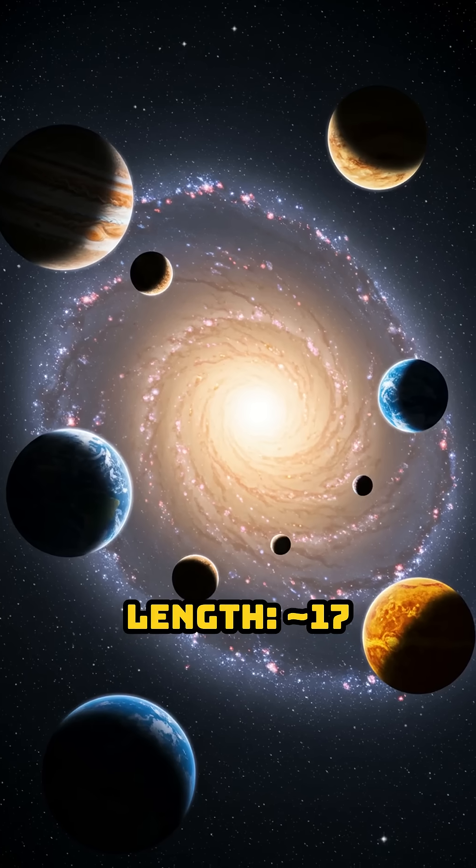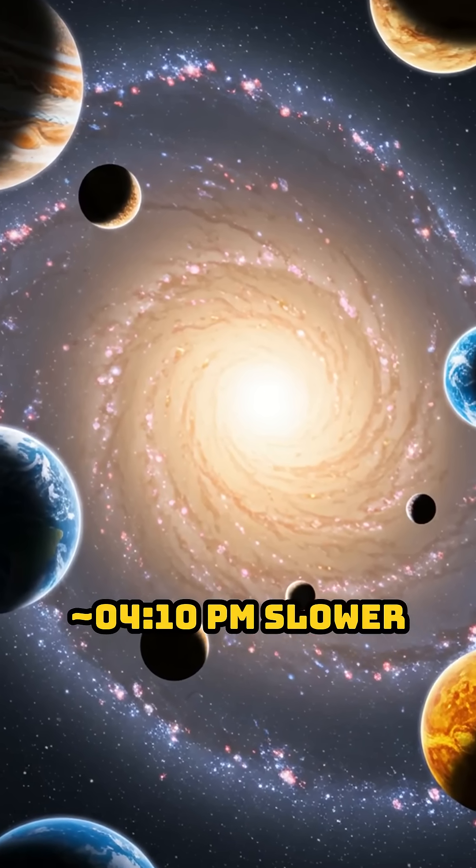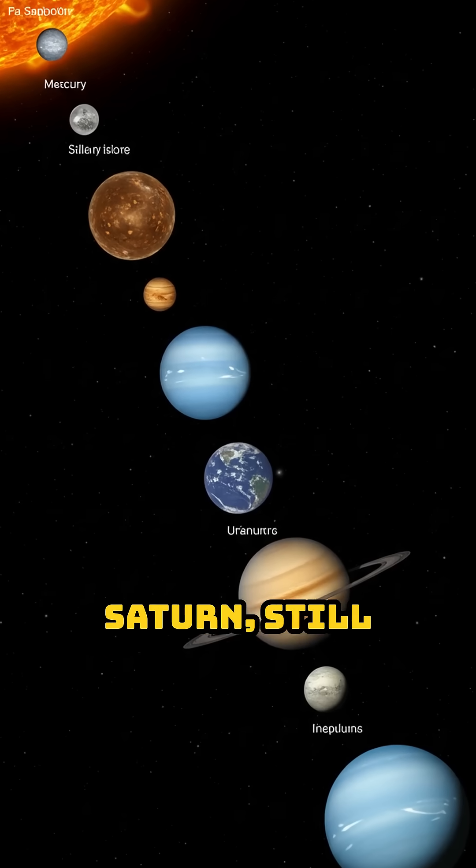Number 7: Uranus. Day length 17 hours 14 minutes, current time 10:10 PM. Slower than Jupiter and Saturn, still faster than Earth.